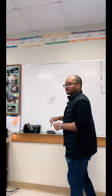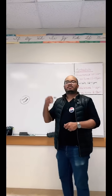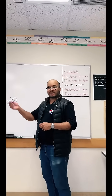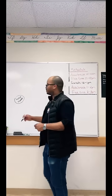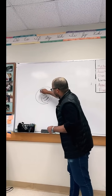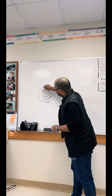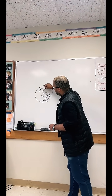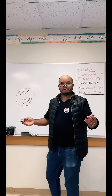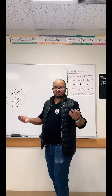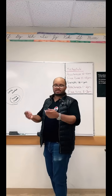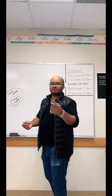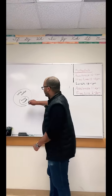Natural numbers were 1, 2, 3, 4, 5, 6 onward, and then we went to whole numbers. All whole numbers did was include 0 — so whole numbers are 0, 1, 2, 3, 4, 5, 6, 7 onward.